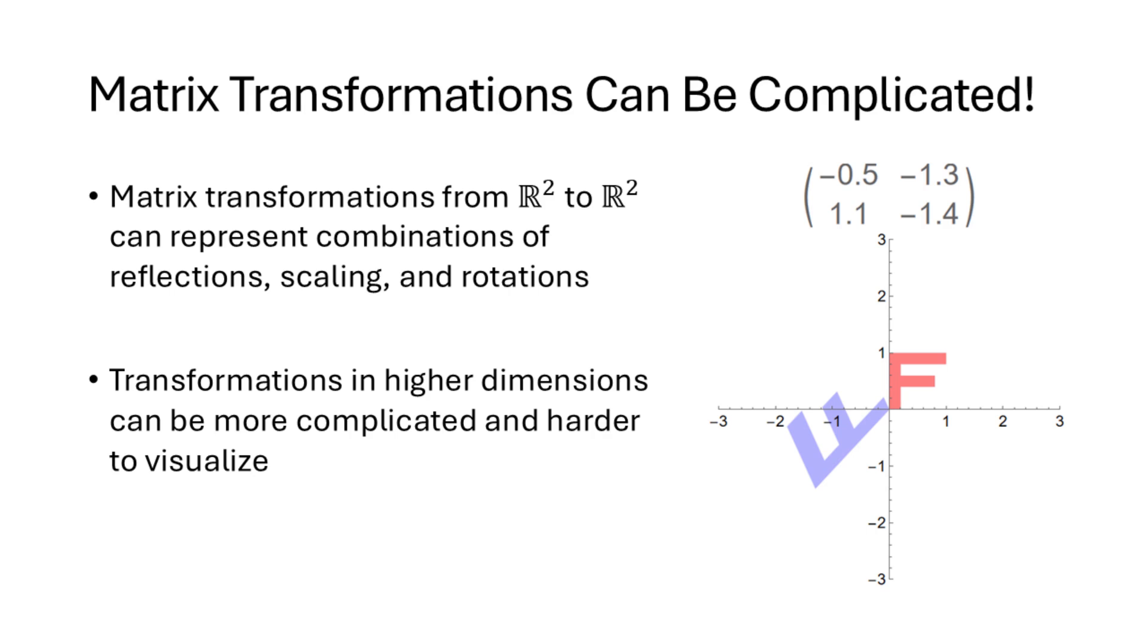But even just looking at transformations from R2 to R2, if we vary the entries of our matrix, we can get all sorts of different transformations. You can see an example here. And these are going to be combinations of reflections, scaling, and rotations. And transformations in higher dimensions can be even more complicated and harder to visualize.